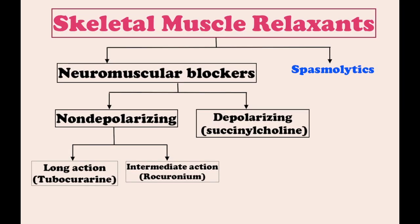Drugs that relax skeletal muscles are divided into two big groups. The neuromuscular blocking drugs (NM blockers), which act at the skeletal neuromuscular junction, are used to produce muscle paralysis to facilitate surgery or assisted ventilation. The spasmolytic drugs, most of which act in the central nervous system, are used to reduce abnormally elevated muscle tone caused by neurologic or muscle and plate disease.